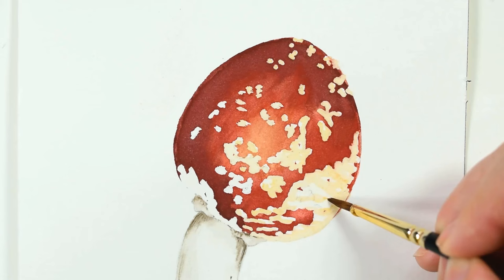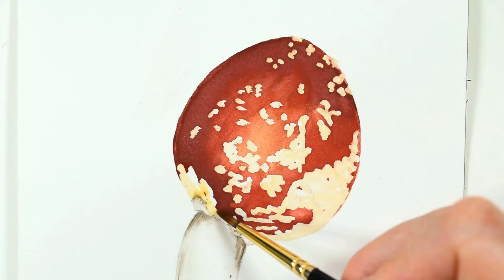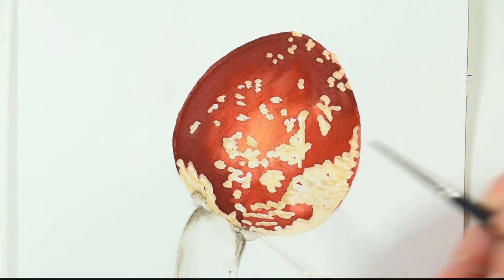And just remember that you can always continue to build on the white areas until you're happy with them, but if you apply too much paint all at once, you won't be able to remove it and regain the whiteness of the paper.